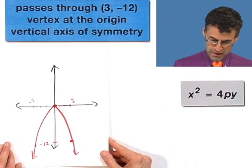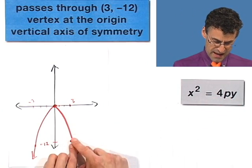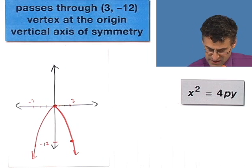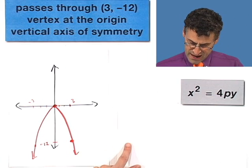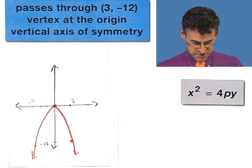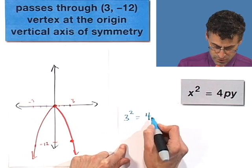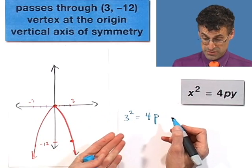And now I want to figure out what all this stuff means. So how do I do that? Well, I know that the parabola is satisfied at 3 comma negative 12. So that means that if I put in 3 for x, the y value has to be negative 12. So let's do that.